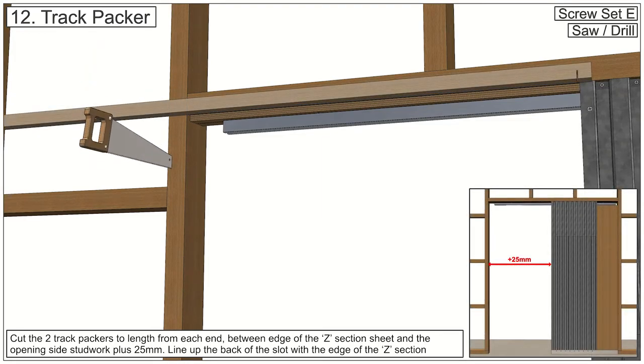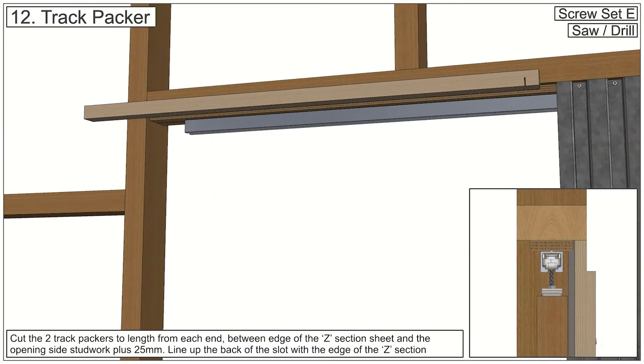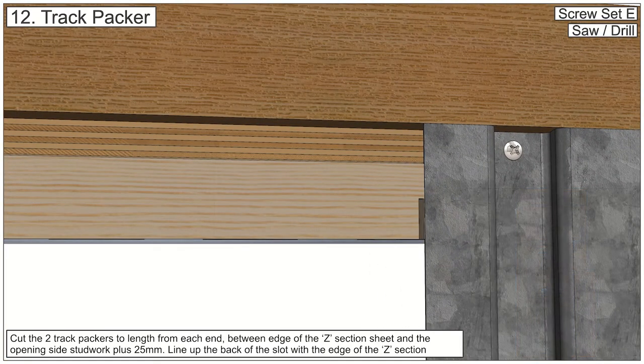Cut the track packers to length between the edge of the Z section sheet and the opening side stud work plus 25mm.